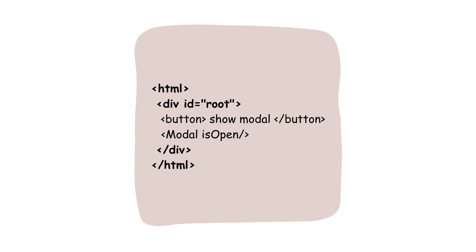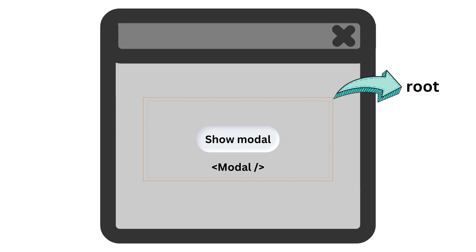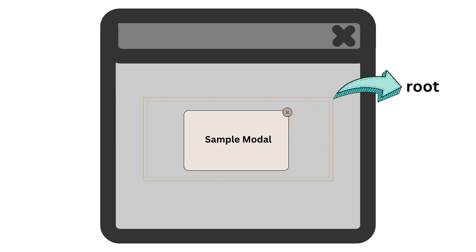On clicking on this button I will show one modal which also is inside this root container. The modal is rendered inside the root container where the modal takes the height and width from its parent element. In this case the parent element is the root container, so this modal is taking height and width of the parent container.